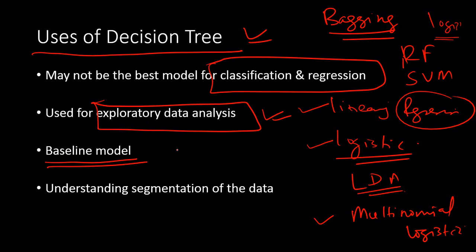Decision tree is also used as a baseline model. You start with a decision tree, take its output as the benchmark, and then try every other possible model to ensure your new model performs better than the baseline. So it's often used for baseline modeling.